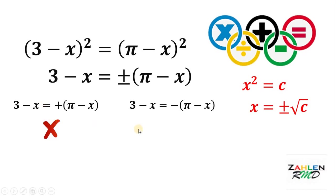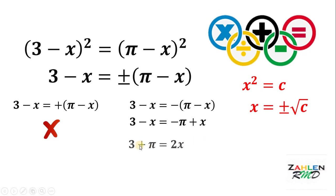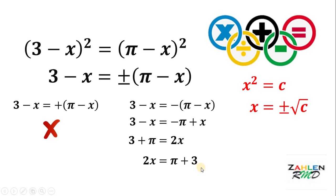Let's move on to the other case. What if 3 minus x equals negative of pi minus x? If we distribute the negative sign, we get negative pi plus x. Next, combining similar terms gives us 3 plus pi equals 2x. Swapping sides, we get 2x equals pi plus 3. Dividing both sides by 2, we get x equals pi plus 3 all over 2. Since we recover the equation we started with, this case is absolutely correct.